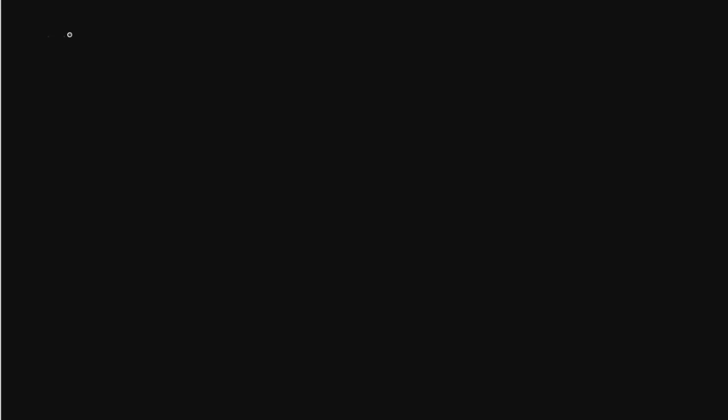So now let us prove the statement we wrote on the previous page. The first step is we want to prove this small part: HnA to HnB to HnC is exact. So we want to show this part is exact. So the first thing is we have to show image of i* is equal to kernel of j*. So first we start with the easier part: image of i* belongs to kernel of j*, and then we will prove the reverse inclusion.